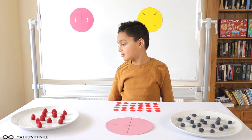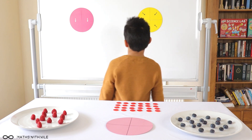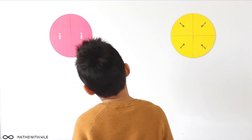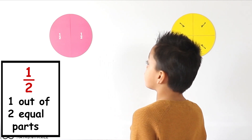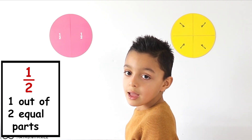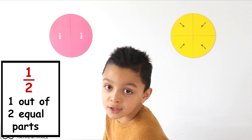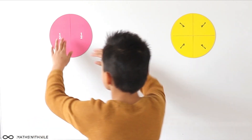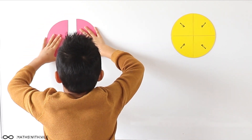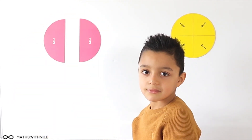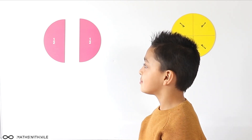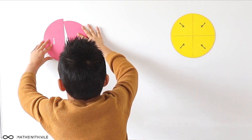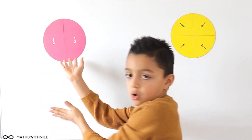So can we start off looking at those fractions on the board? Can you remind us what one half means? One half means like one out of two equal parts. And the two equal parts make one whole. So can you show us the two equal parts for one half? Can you separate them a bit? Two equal parts. So we have two equal parts. So one of those is one half. And if you put them together, you said it makes one whole.